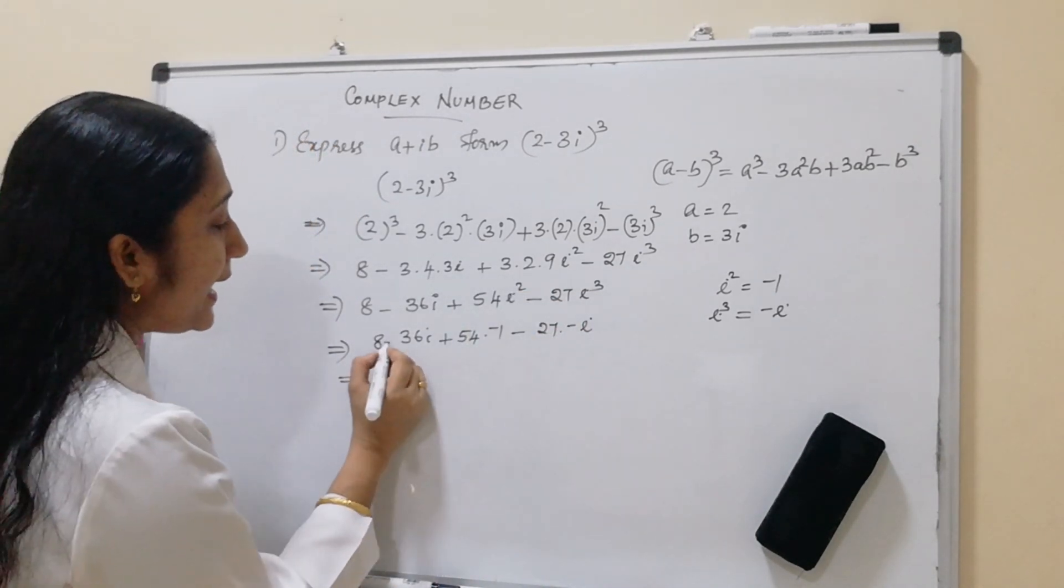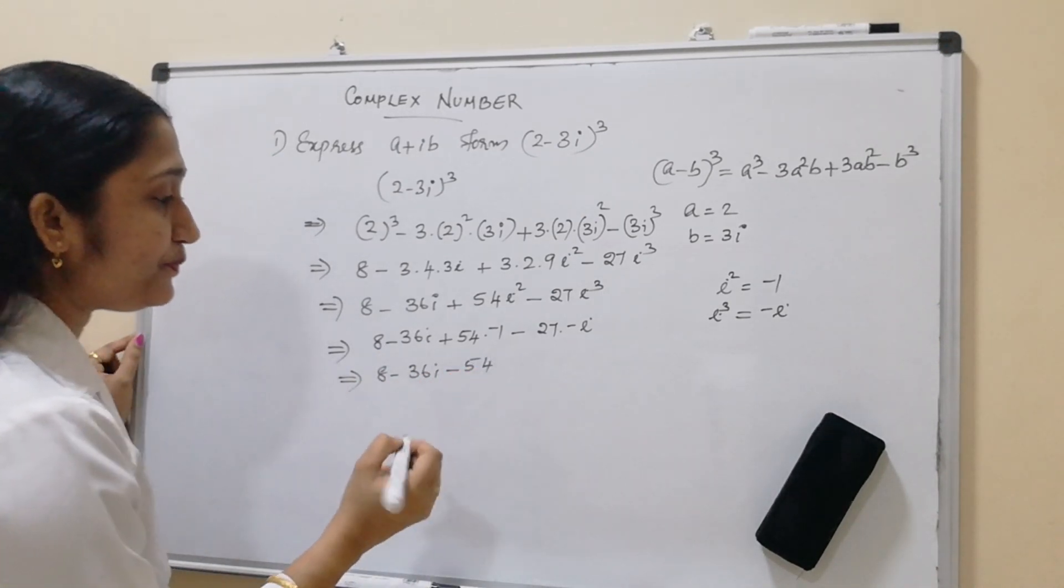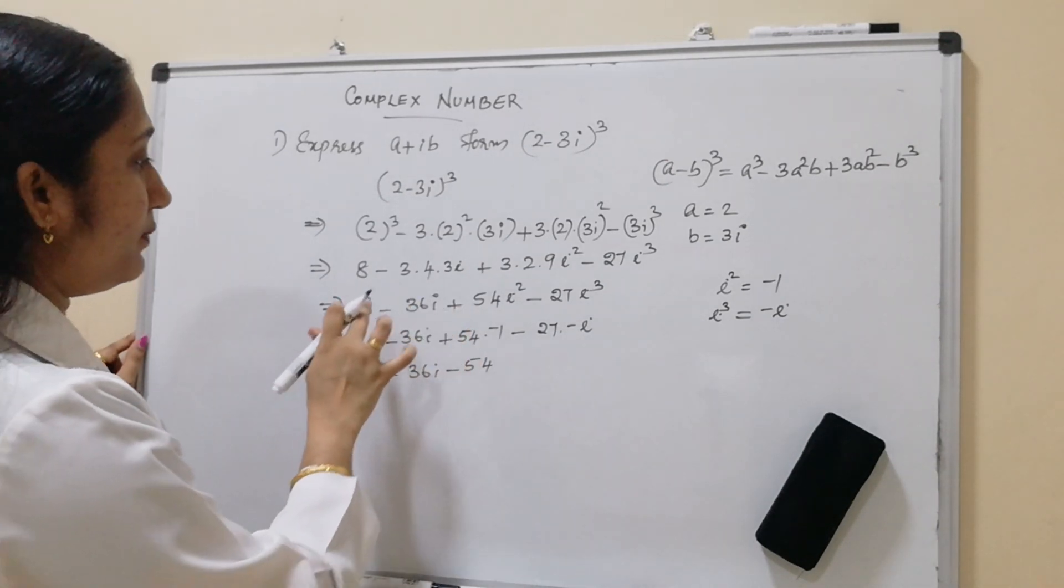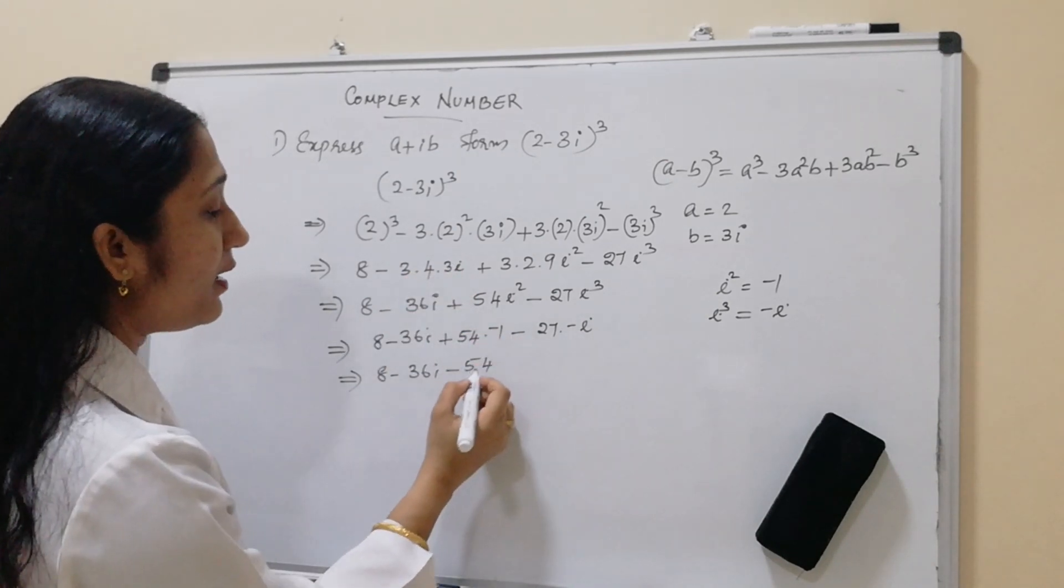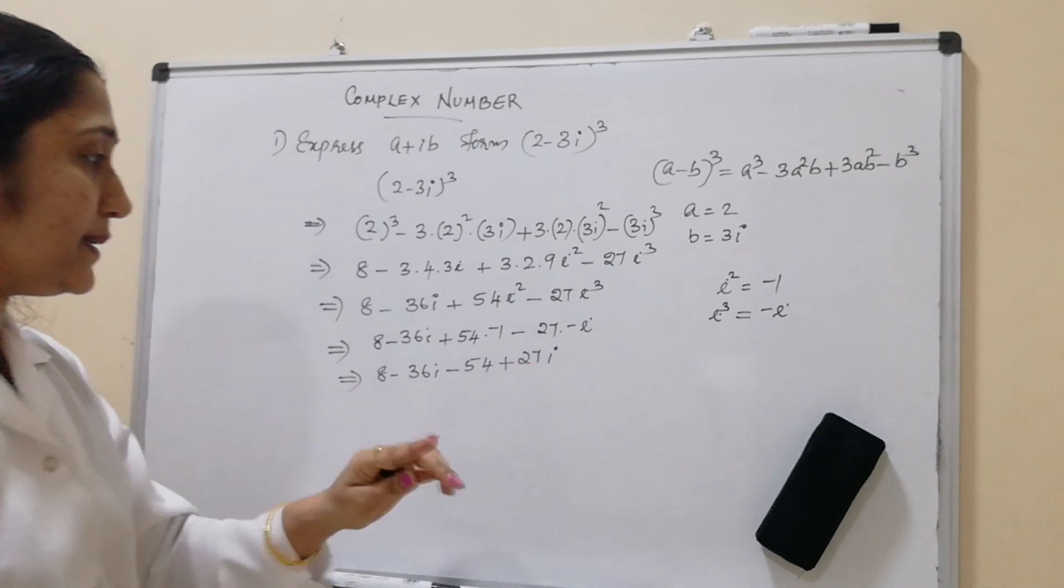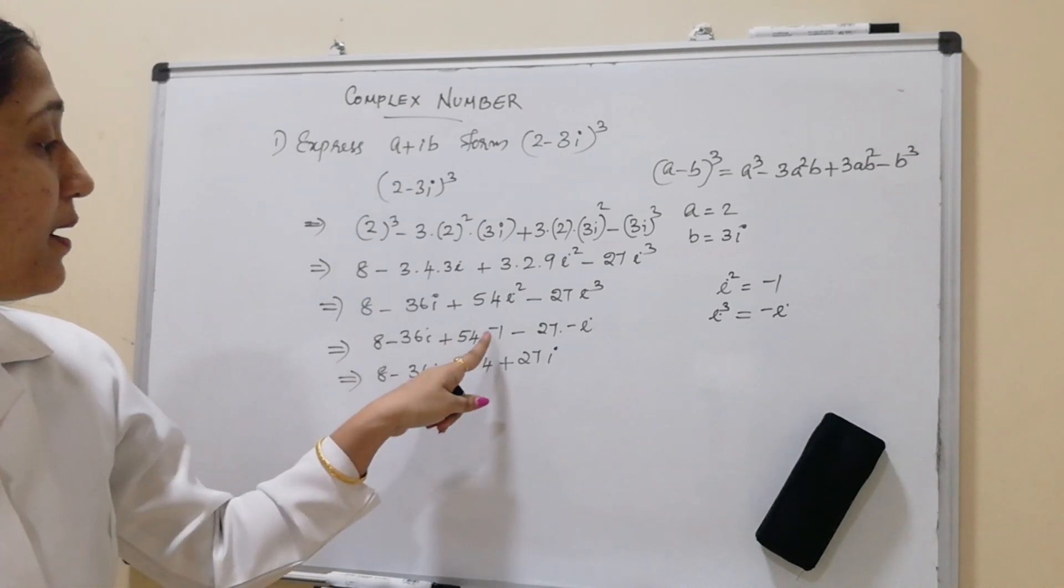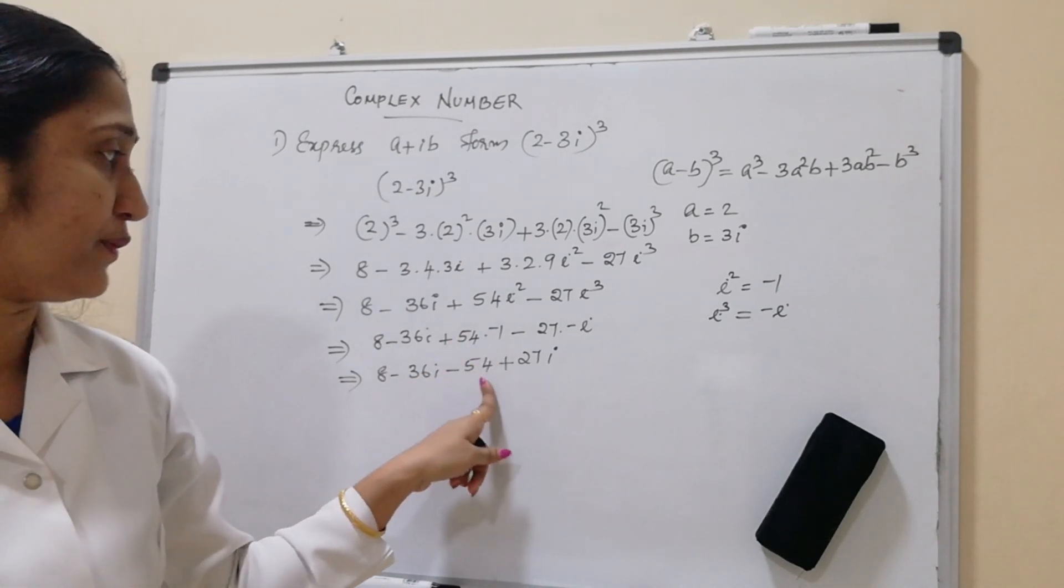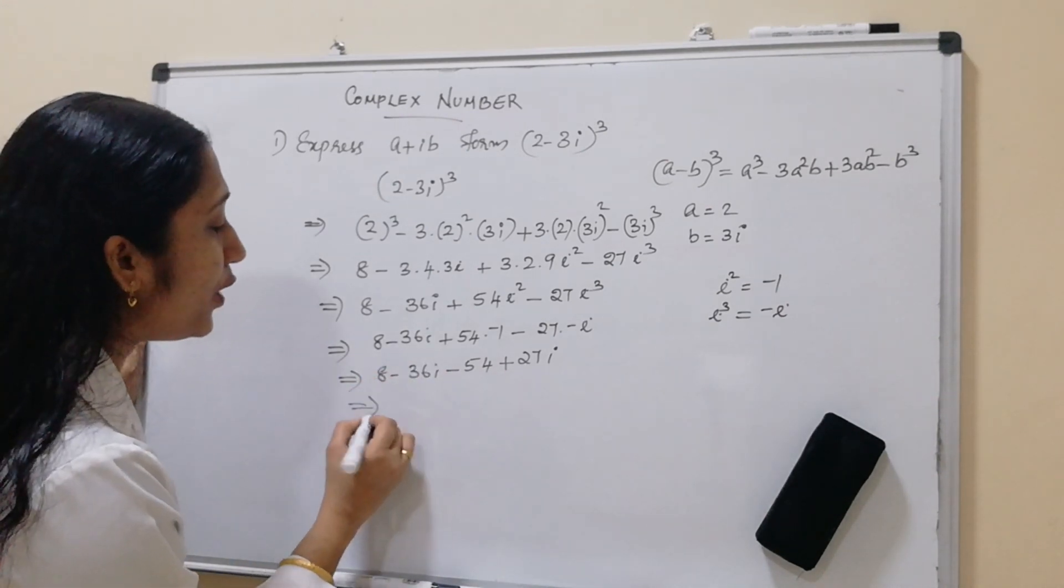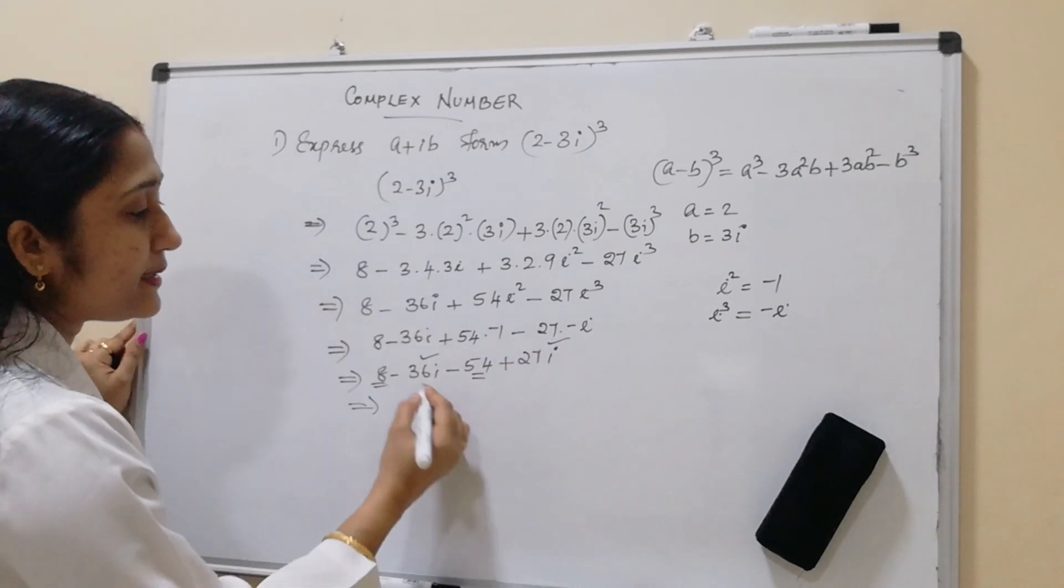So let us see this. 8 minus 36i here minus 1 is here. So that is minus 54 plus 27i. So that means we know these two are real part, these are imaginary part. Okay, so let us see this here.